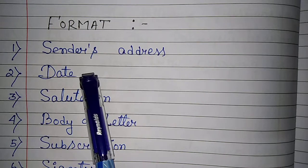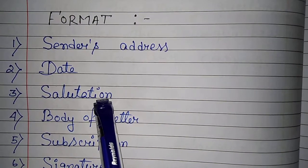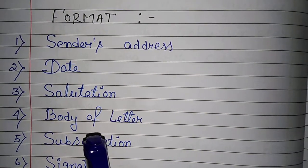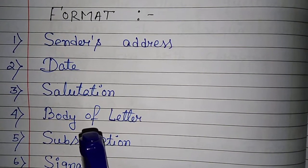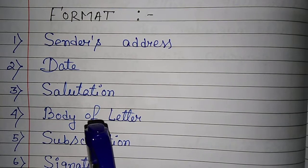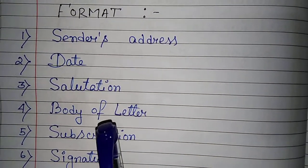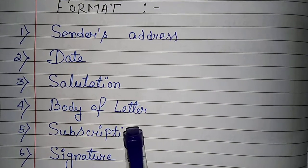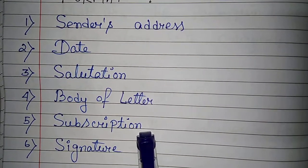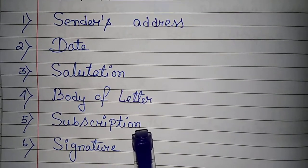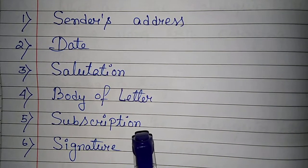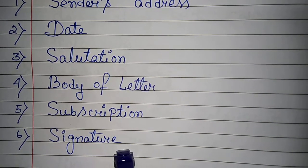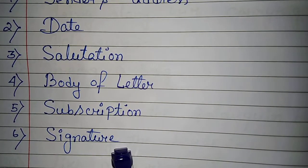The second part is the date — it's very necessary. The third part is salutation, where you pay respect and refer to the person you are writing the letter to. The fourth part is the body of the letter, the main part. The fifth part is subscription, which is the thanking part — the second last part of a letter. And the last but not the least is the signature — your name and designation.